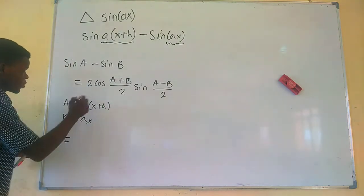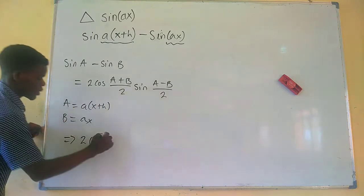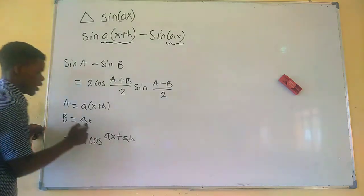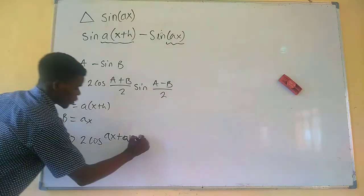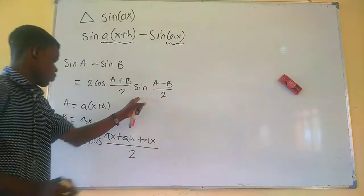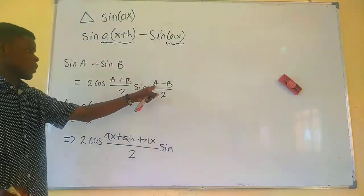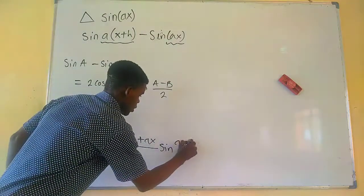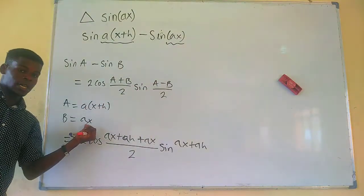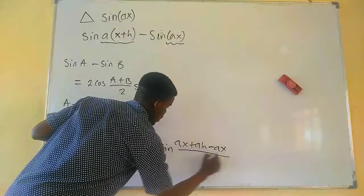So we have this will now become 2 times cosine of, now A alone is a times x plus h plus B, that is plus ax divided by 2. And again, we are going to put sine of, now in this other place, we have A here which is a times x plus ah and minus B. So we are going to subtract this from that. So we have now ax plus ah minus ax divided by 2.